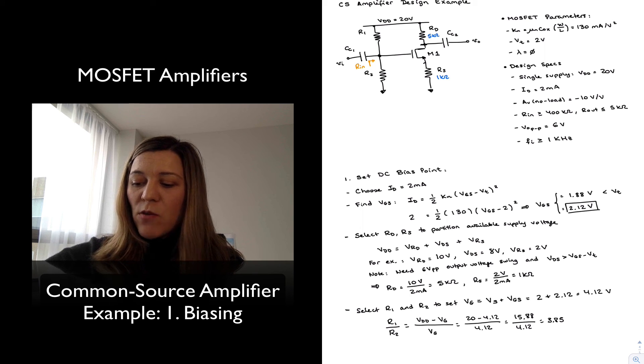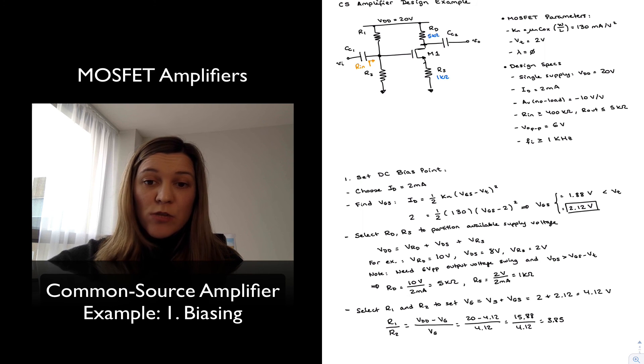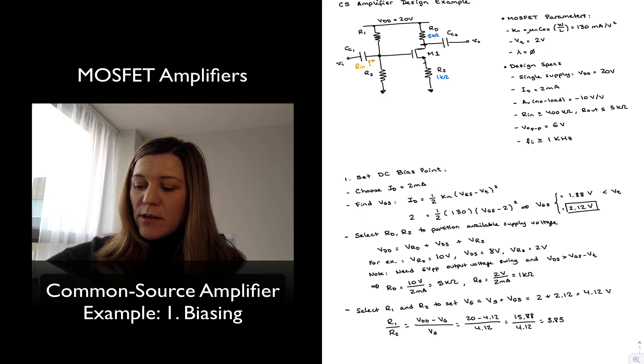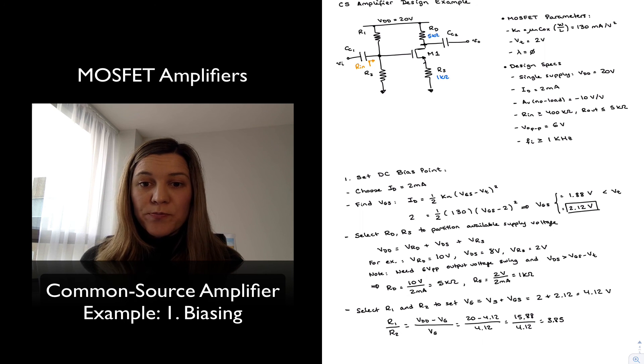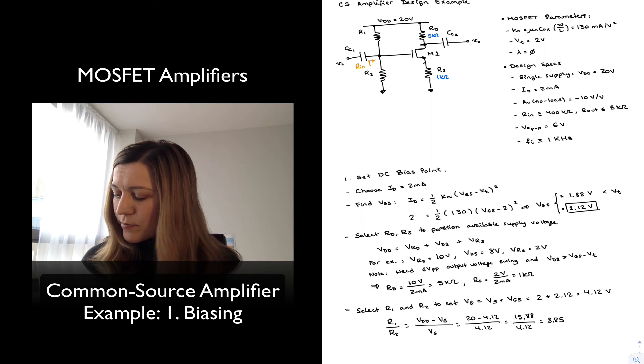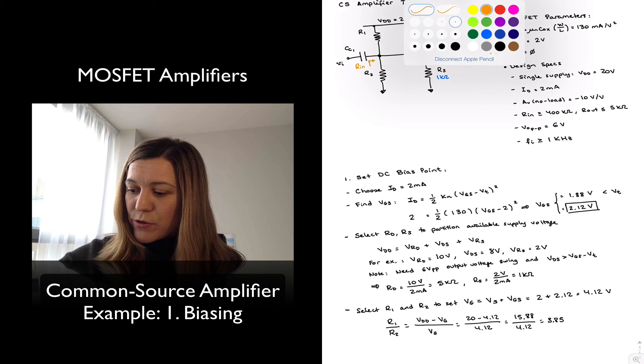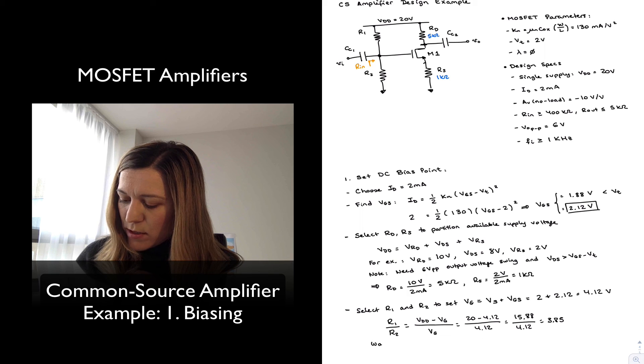So I will see R1 going to essentially a DC source, which is a ground for AC purposes, and R2 going to ground. So R1 in parallel with R2 in parallel with the resistance looking into the gate of the transistor, which is infinity, and therefore simply R1 in parallel with R2.